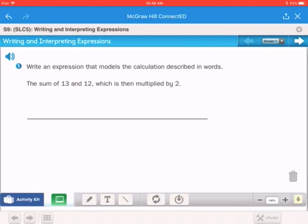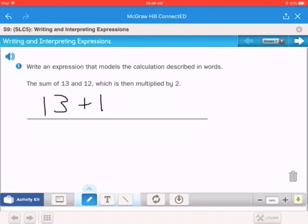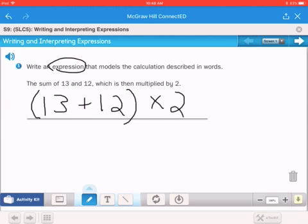So when I think of sum, I know that that's an addition problem. So I would do 13 plus 12. Now, I'll do that because we want to do that first. I'm going to put the parentheses there and then multiply by 2. Again, since they're just going for expression, we don't need to solve that one. So that was the first question.